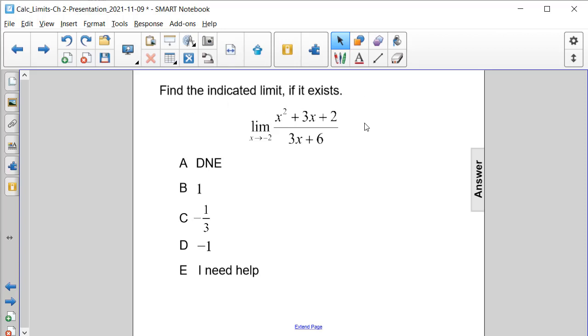Find the indicated limit if it exists. The limit of x squared plus 3x minus 2 all divided by the quantity 3x plus 6 as x approaches negative 2.